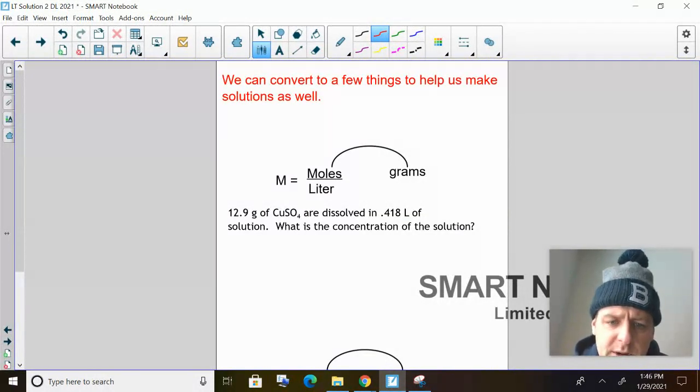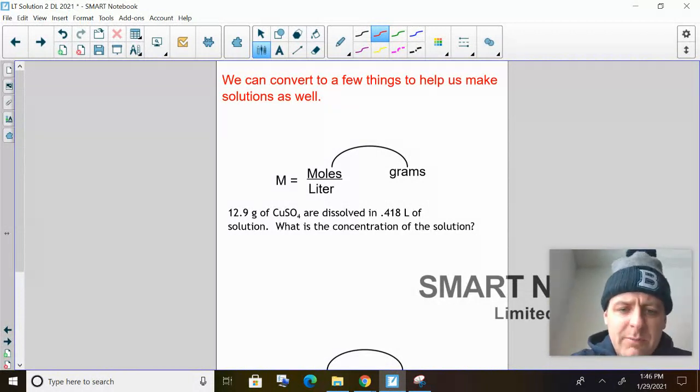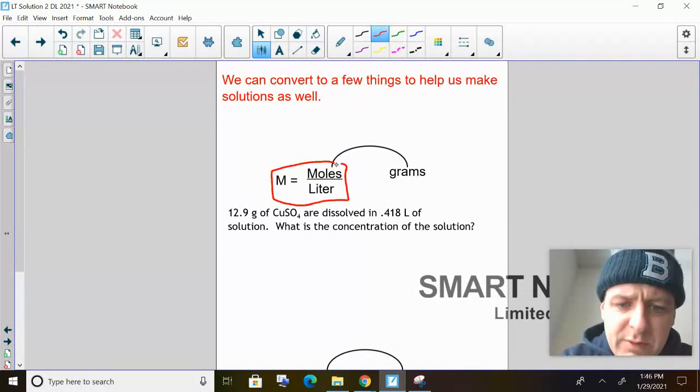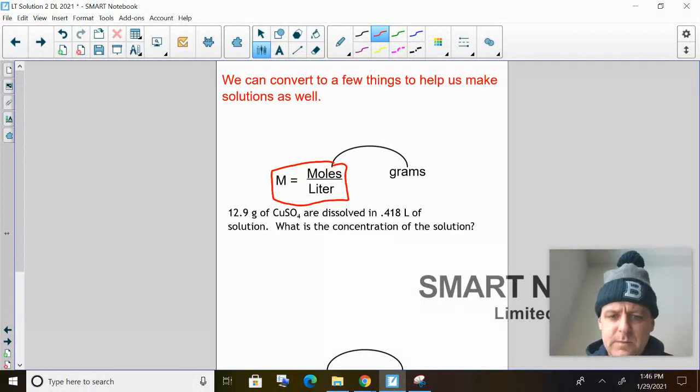Now, we can convert a couple things to help us out. Because we always don't use moles in chemistry, we use grams a lot. So to solve for big M, you have to be in moles and you have to be in liters. Have to be.